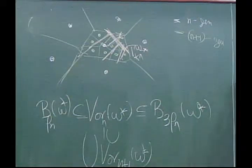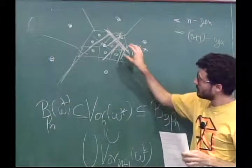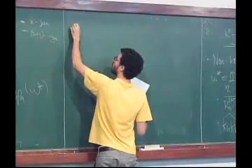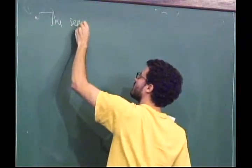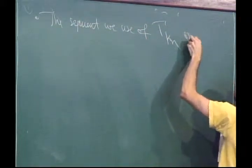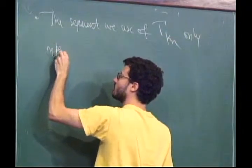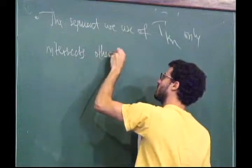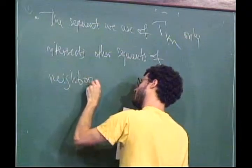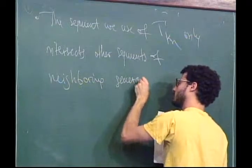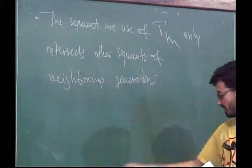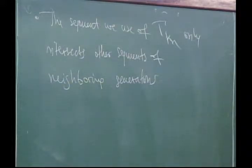Also, with this construction of nested Voronoi cells and Vitali's lemma, what you get is that Γ_{K_n} — the resonant segment — only intersects other segments of neighboring generations. So we have very good control of the resonances, which is crucial to be able to construct the cylinders. We don't want any segment to intersect segments of much lower order.